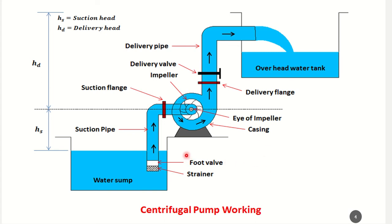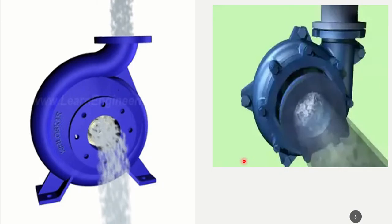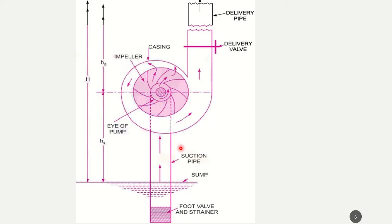There is also a suction valve and a delivery valve. So the four main components are: impeller, casing, suction pipe with foot valve and strainer, and delivery pipe. As noted, water enters the impeller radially and comes out, which can be observed in the diagram — this is also taken from the RK Mansell textbook.